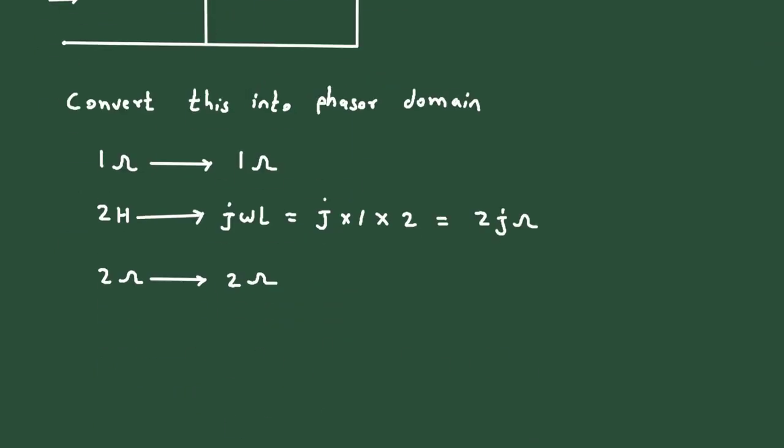Then this is 1 Farad. So this will be 1 upon j omega C. 1 upon j into omega value is 1. Then capacitance value is also 1. So it will be minus j ohm.